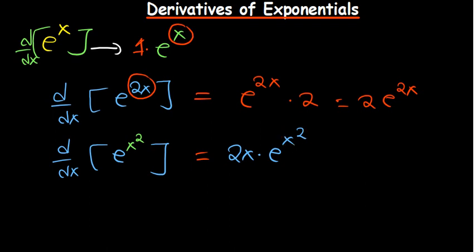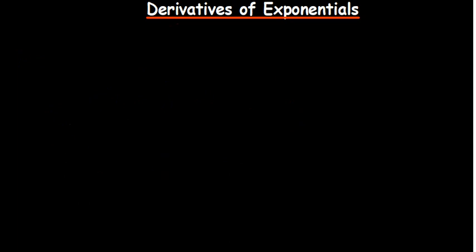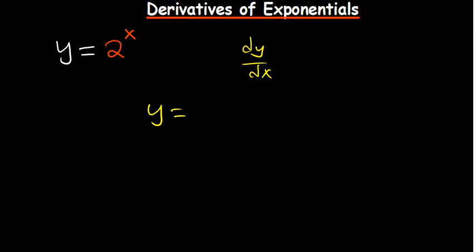One important thing about exponentials: the power does not change. That's it for the base-e case. Now let's look at where we've got different bases. Say y equals 2 to the power x. The general formula: if y equals a to the power u, we need to find dy/dx.